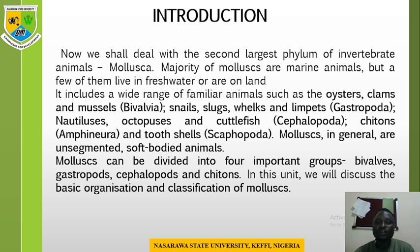Mollusca includes a wide range of familiar animals such as the oysters, the clams, the mussels, the snails, the slugs, the whelks, the limpets, the nautiluses, the octopuses, the cuttlefish, the chitons, and the tooth shells such as Scaphopoda. Mollusca in general are unsegmented soft-body animals.